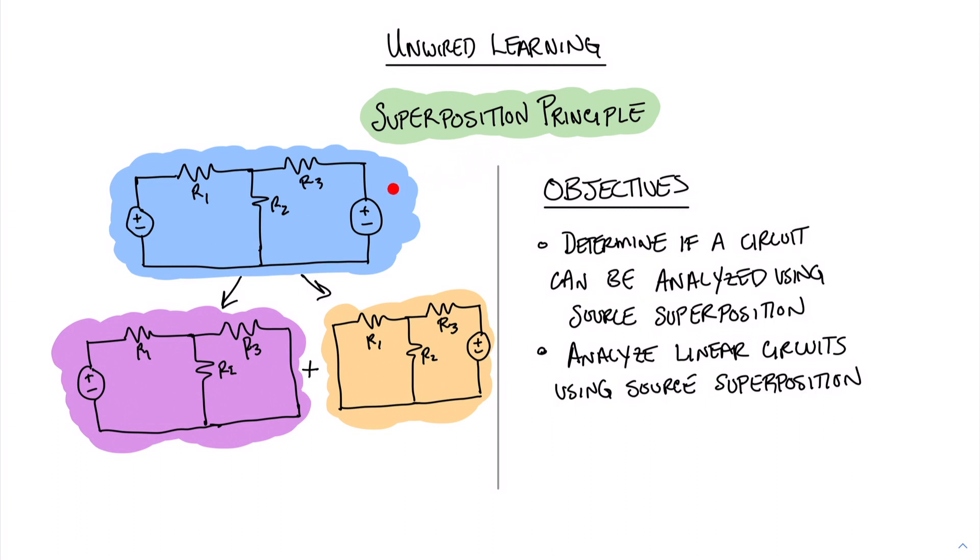This is the idea that we can take a circuit that has two sources, or more sources, and we can split the circuit up into its linear components, and we can solve one circuit, then solve the other, and add the results together to get the correct answer for the entire circuit.